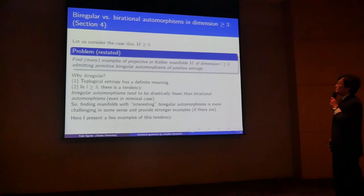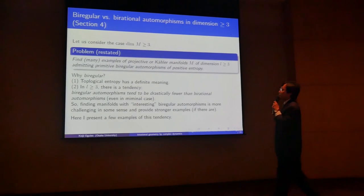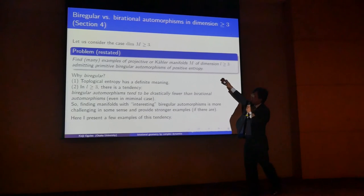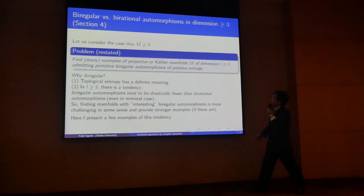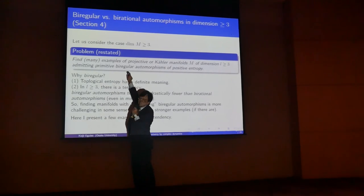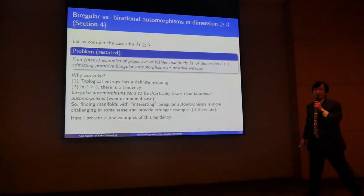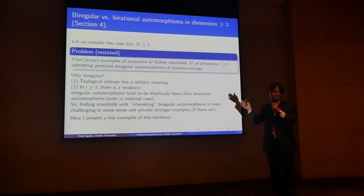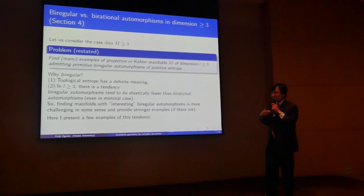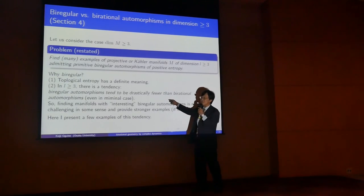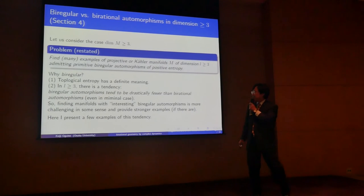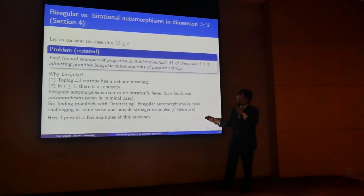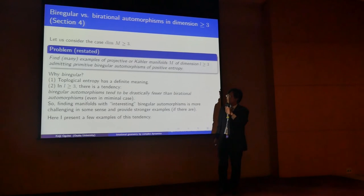We are more interested in the higher dimensional case — dimension greater than or equal to three. In fact, we are constantly working on this problem. I have already explained this, but the restriction to biregular automorphisms is not yet explained. One reason is that topological entropy has a good meaning. More interesting to me is that in dimension greater than or equal to three, biregular automorphisms tend to be very huge compared to birational automorphisms, even in the minimal case. This is completely different from the K3 surface case where these are the same. So in some sense, finding biregular ones is more challenging. But once we find one, it gives stronger results since the requirement is stronger.